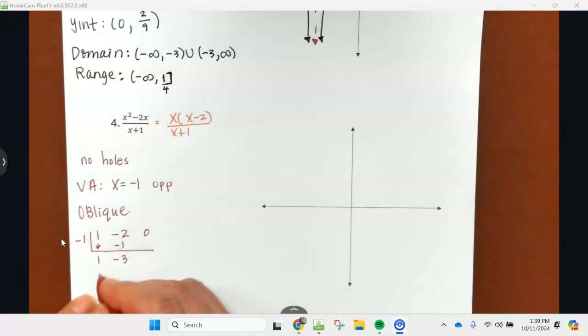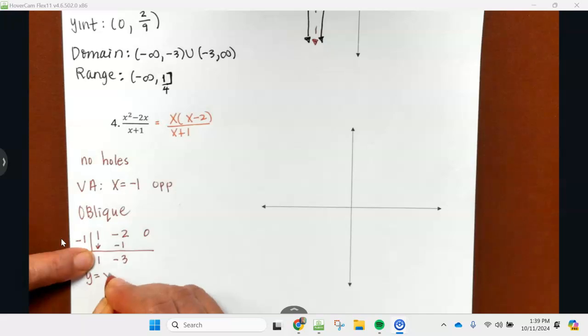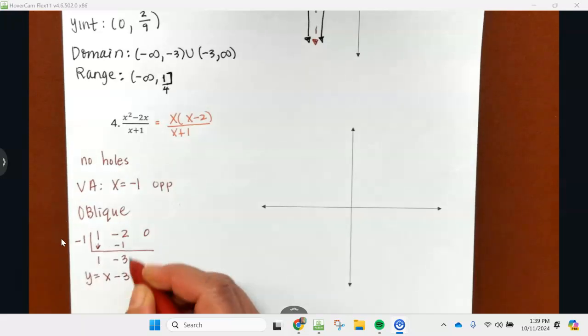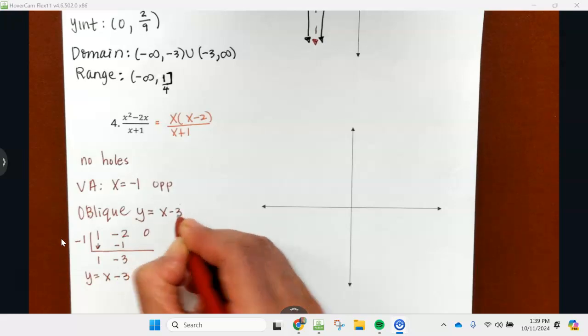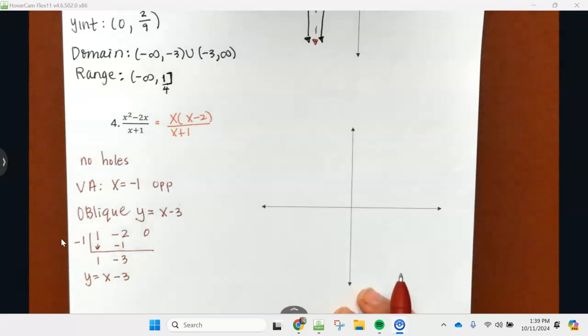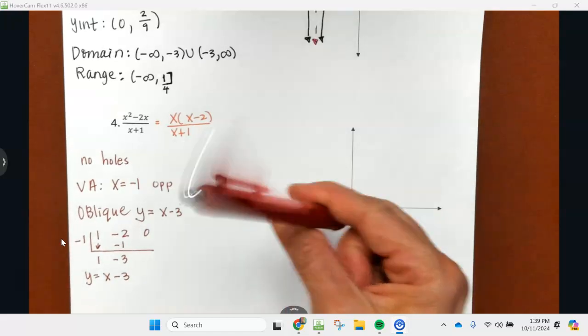That's it. We don't even care about the remainder. This is y equals one x minus three, so our oblique asymptote is y equals x minus three. Okay, let's continue with the process. I'm done with my red pen.